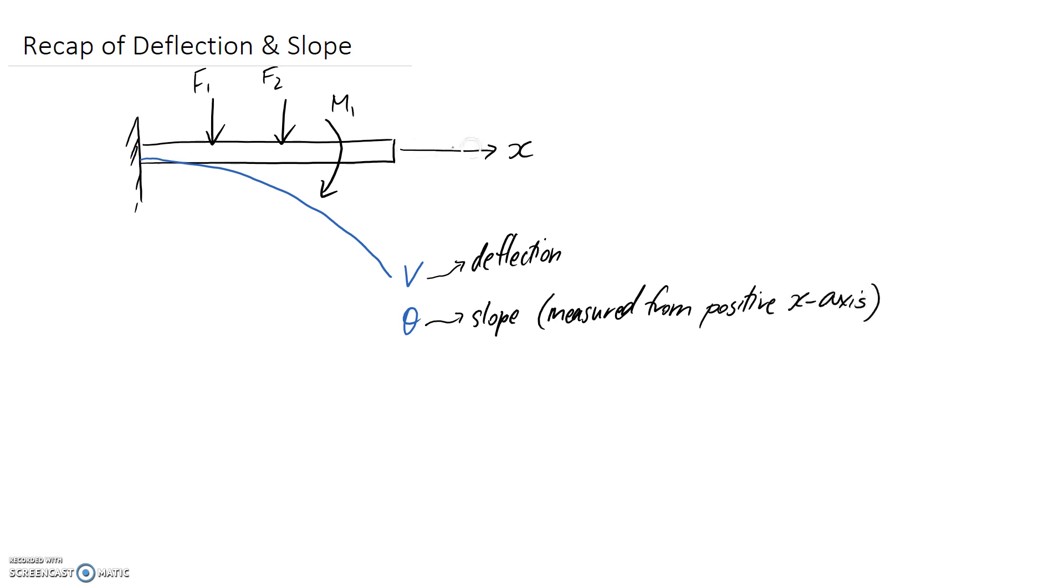Theta is going to be measured from the positive x-axis. So if this is the positive x-axis, you either measure the angle this way or this way, depending on whether the beam bent up or down.